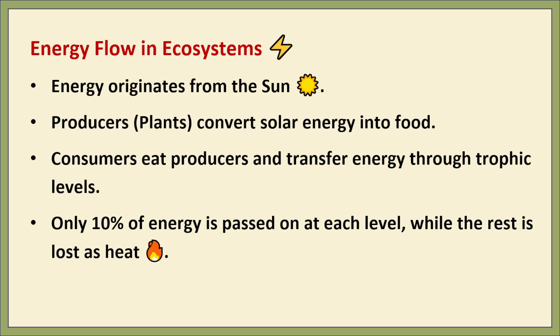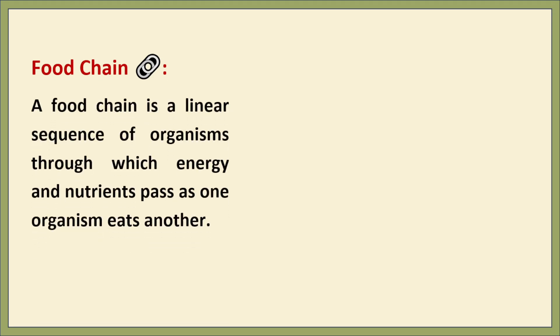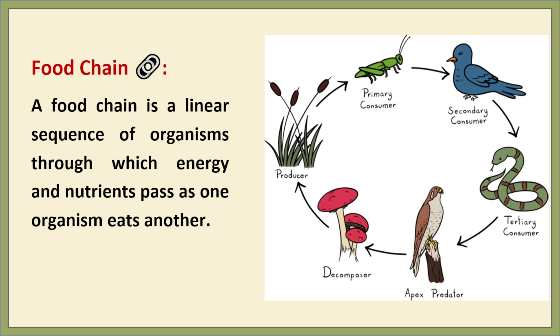To understand how energy and nutrients flow through this system, ecologists use the concepts of food chains and food webs. A food chain is a linear sequence of organisms through which energy and nutrients pass as one organism eats another. It represents a single pathway of energy flow in an ecosystem. An example of a food chain starts with a producer like grass, then grasshopper, then a small bird, then a snake, then eagle, then mushroom and fungi, and finally nutrients back to the producer.